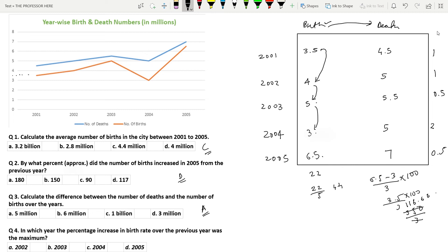In 2004 to 2005, it increases from 3 to 6.5 that is an increase of more than 100 percentage which is higher than any of the given value. So the question here is in which year the percentage increase in birth rate over the previous year. So the year in which the percentage increase is more is 2005. Option D is the answer.